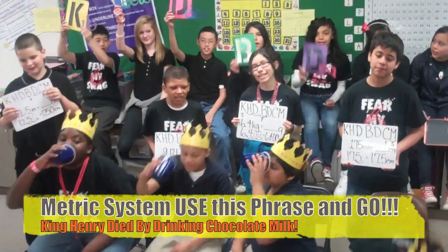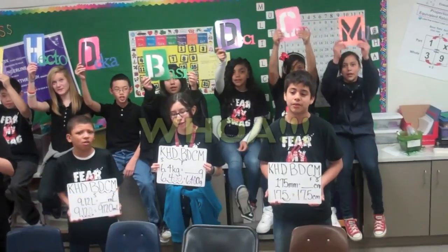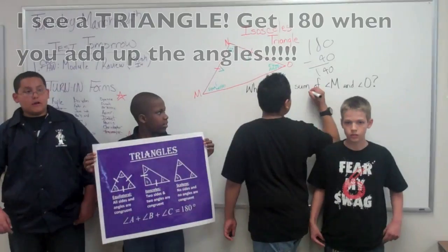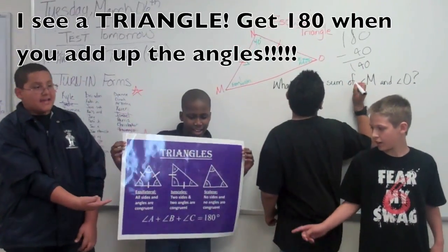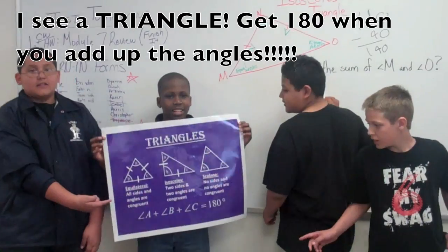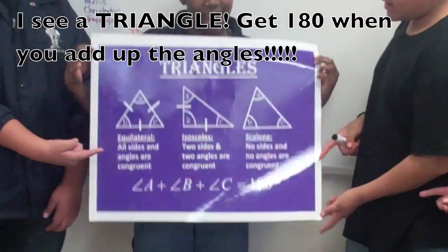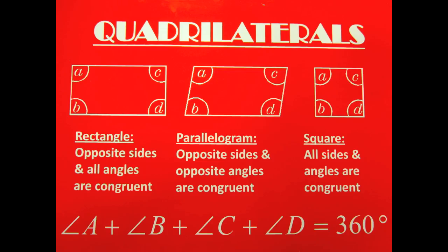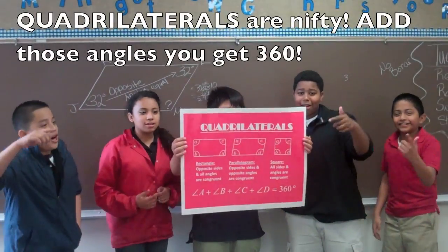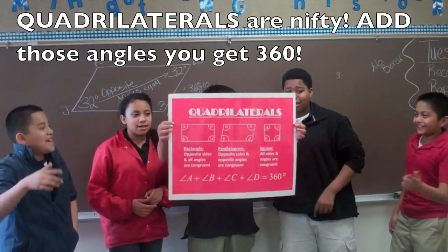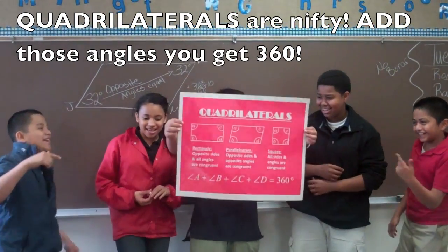Metric system, use a phrase and go: King Henry died by chicken chocolate milk! Yo! I see a triangle! Get 180 when you add up every angle!